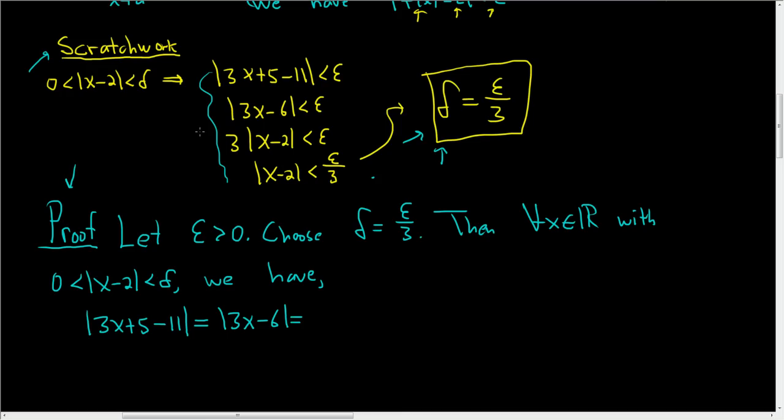Here, again, we're just mimicking what we did here, so we're going to factor out a 3. And we know something about x minus 2. x minus 2 is less than delta. So 3 times x minus 2 is less than 3 delta. And what's delta? Well, delta was chosen by us to be epsilon over 3. So this is equal to 3 times epsilon over 3.